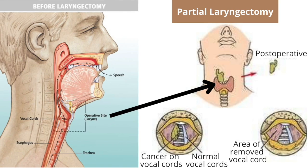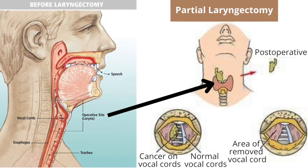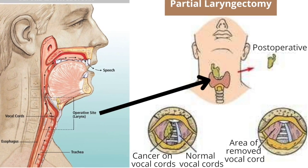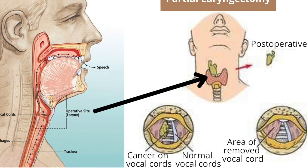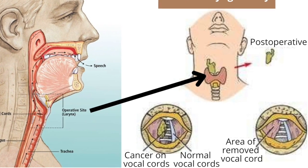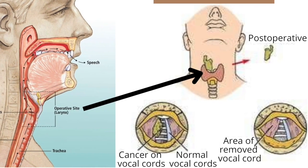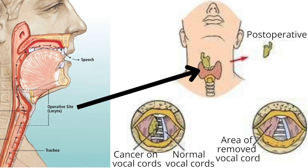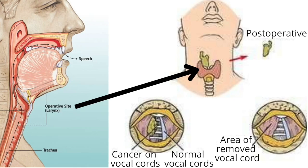A partial laryngectomy is a more common treatment for laryngeal cancer. It is a surgical treatment meant to preserve the voice. The airway is not separated from the nose and mouth, and one vocal cord or a partial piece of the vocal cord is removed.